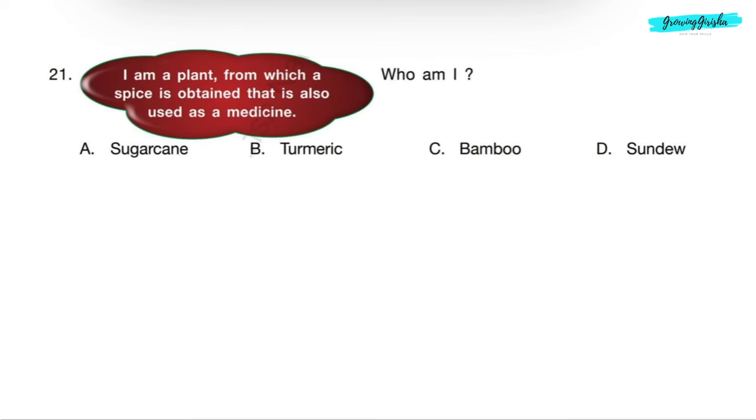Question 21: I am a plant from which a spice is obtained that is also used as a medicine. Who am I? Turmeric or haldi is obtained from stem of turmeric plant. It is used as spice, yellow colored powder in food. Turmeric also has some medicinal value. It is very effective antiseptic and gives relief from joint pain etc. So correct answer is option B: Turmeric.